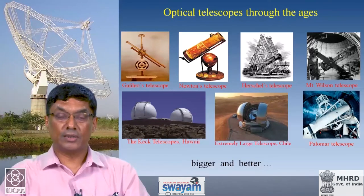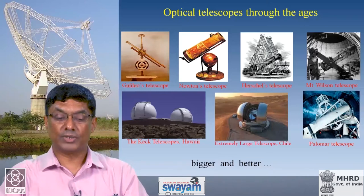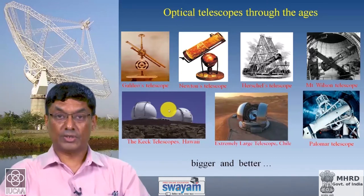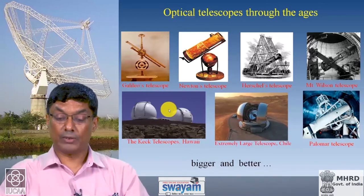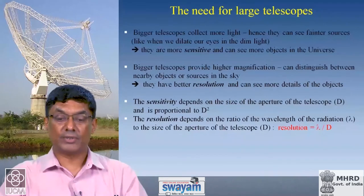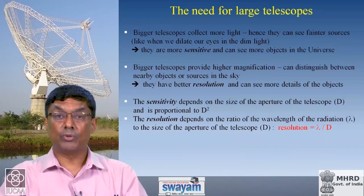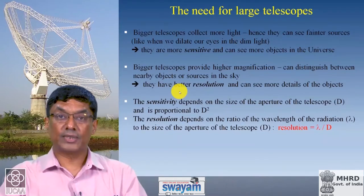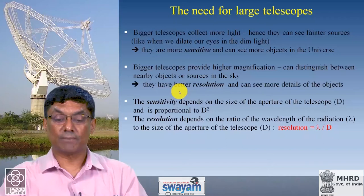You can see the evolution of optical telescopes from Galileo's small telescope all the way to modern ones, which are very large structures with very specialized instruments. The basic message is that bigger is better. A bigger telescope collects more light — when you collect more light you are more sensitive, and therefore you can see fainter sources more easily.